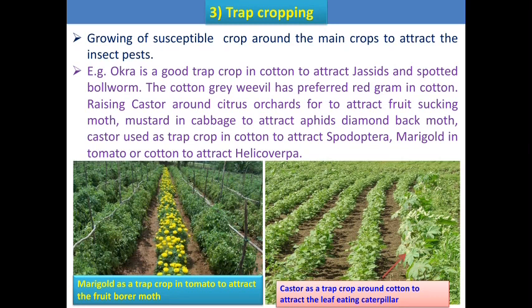The fruit borer is a pest of both tomato and marigold. But marigold is the most susceptible crop to fruit borer compared to tomato, hence marigold is used as a trap crop in tomato. Another example: castor is used as a trap crop around cotton to attract the leaf-eating caterpillar, as castor is the most susceptible host of leaf-eating caterpillar compared to cotton. Castor is used as a trap crop in cotton against Spodoptera litura.